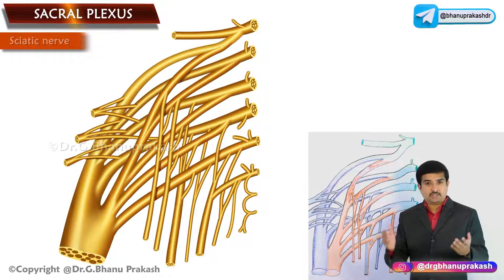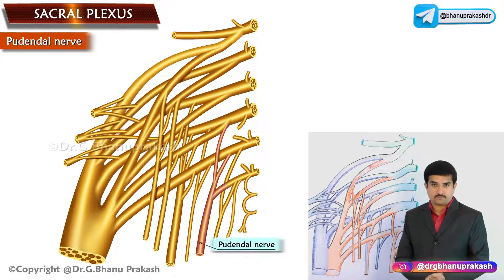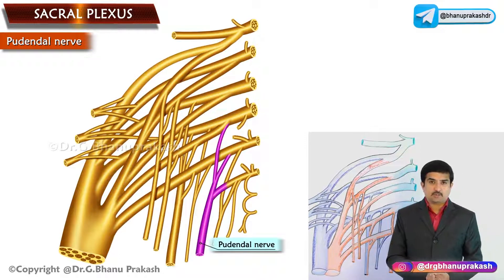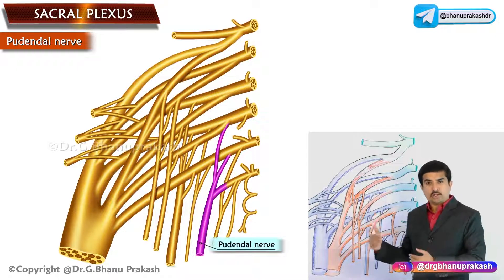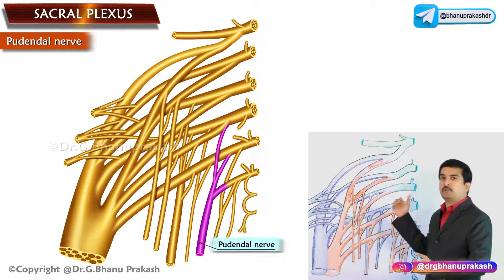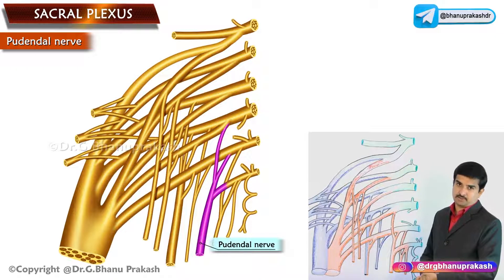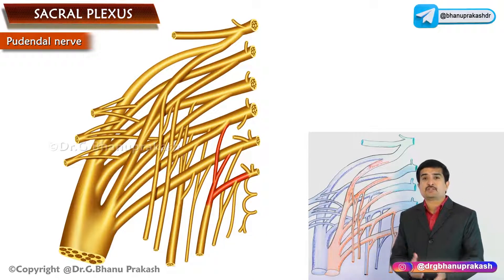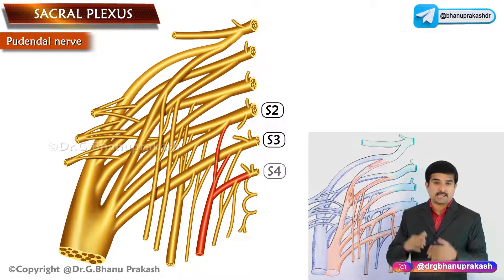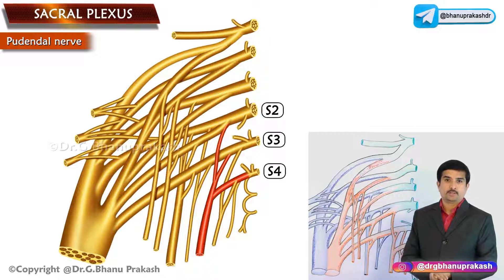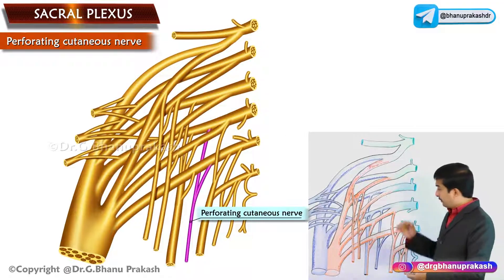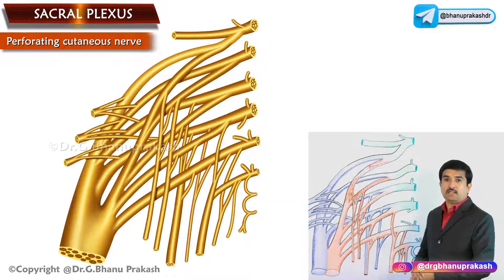The pudendal nerve is the lower and smaller terminal branch of the sacral plexus. It is formed from the ventral divisions of S2, S3, and S4.